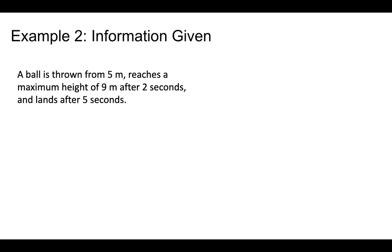You can go ahead and try question number two on the graphs given handout, then check my solution. What I'm going to do next is do an example where you're told information and then have to make a graph. This is for the second handout. Here's the example: a ball is thrown from five meters, reaches a maximum height of nine meters after two seconds, and lands after five seconds.